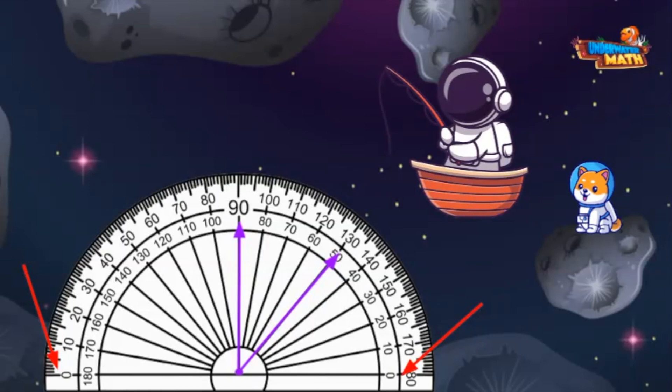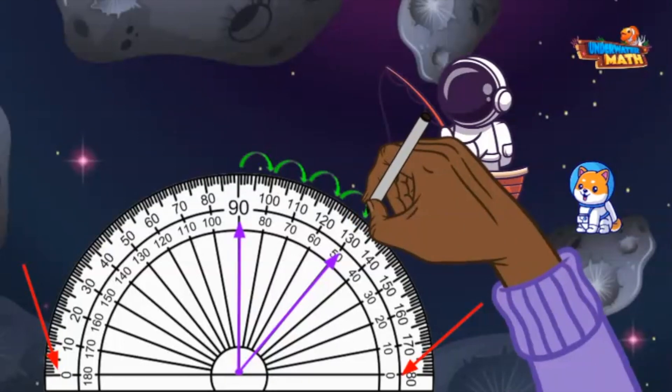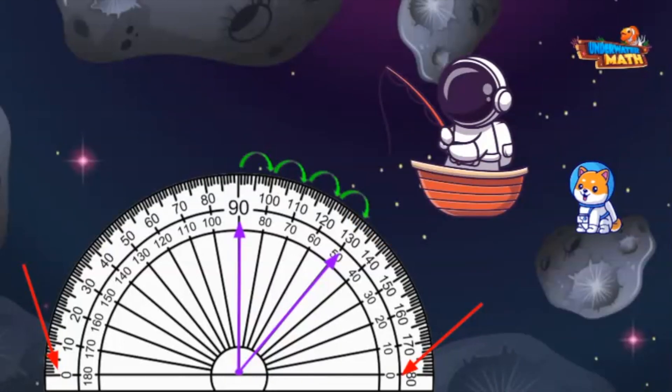To measure this angle, we can start at one ray and count by tens until we reach the second ray. The first ray is obviously 90 degrees because the ray goes straight through 90. Then we count 10, 20, 30, 40. We counted to the second ray. The angle measures 40 degrees.